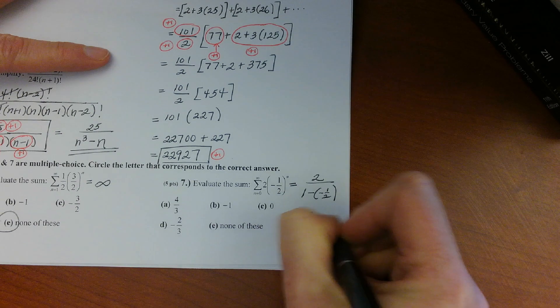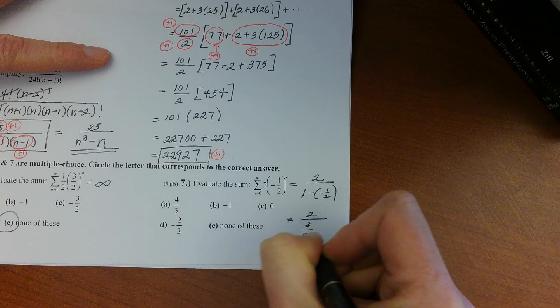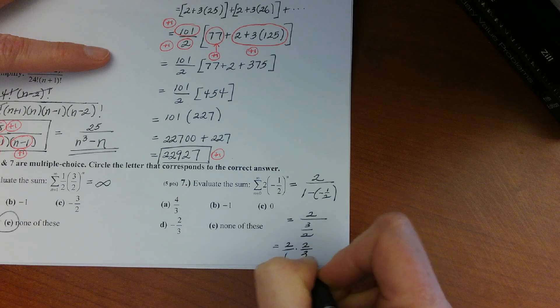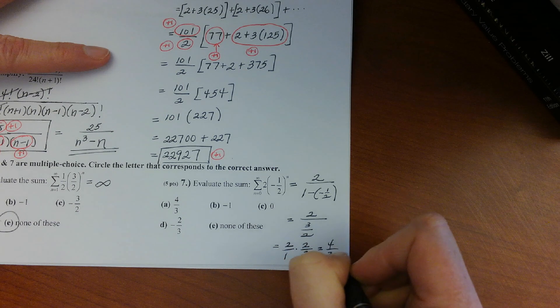And so that would be 2 over one and a half, or three halves. And then a little flip and multiply, you'd be left with 2 over 1 times two thirds, and so you'd get four thirds for the answer to that one. There we go.